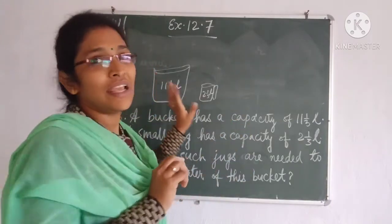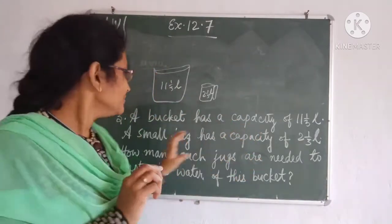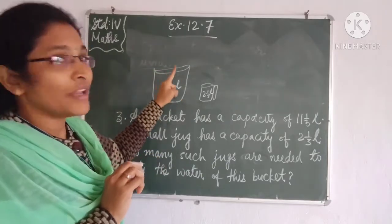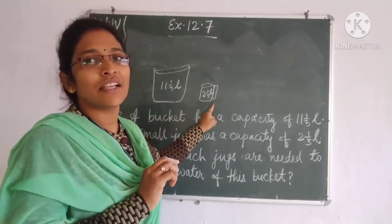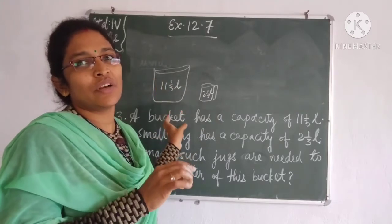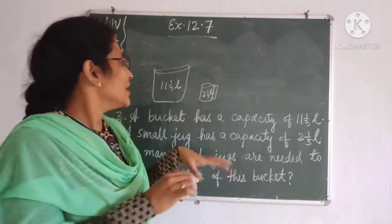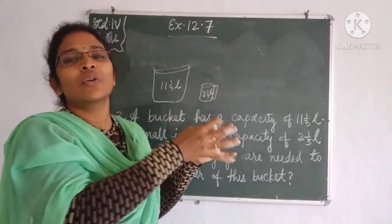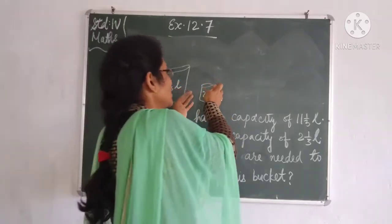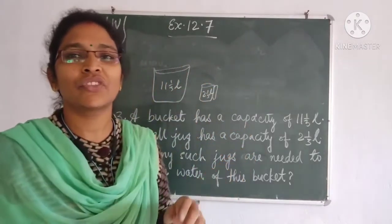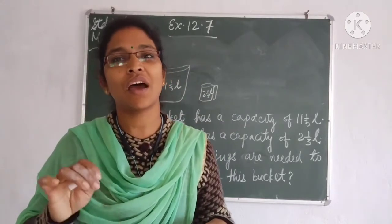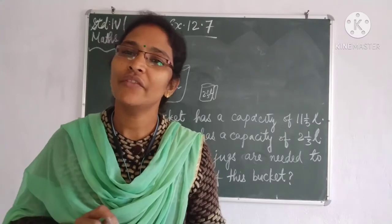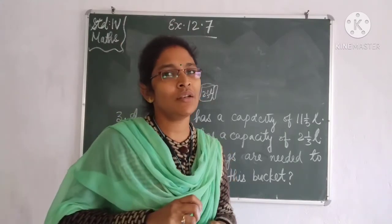To empty the bucket means we want to find how many jugs of water are included in this bucket. The quantity in the big bucket is given, the quantity in the small jug is given, and we need to find the number of things — how many jugs are needed. So we do the division process.